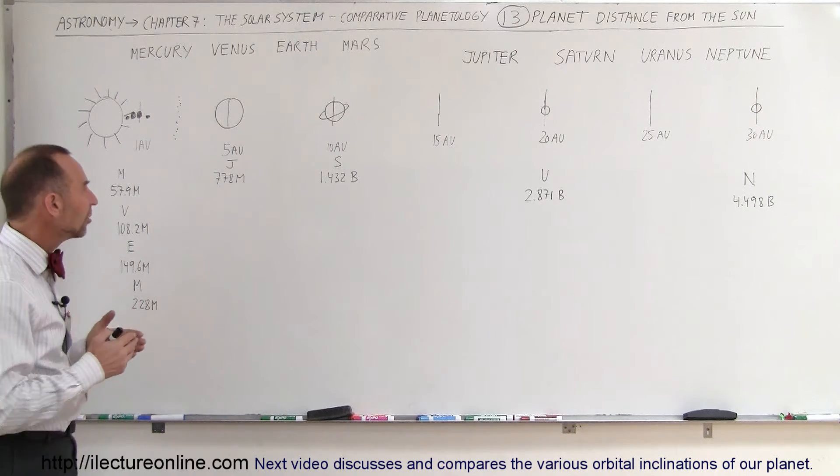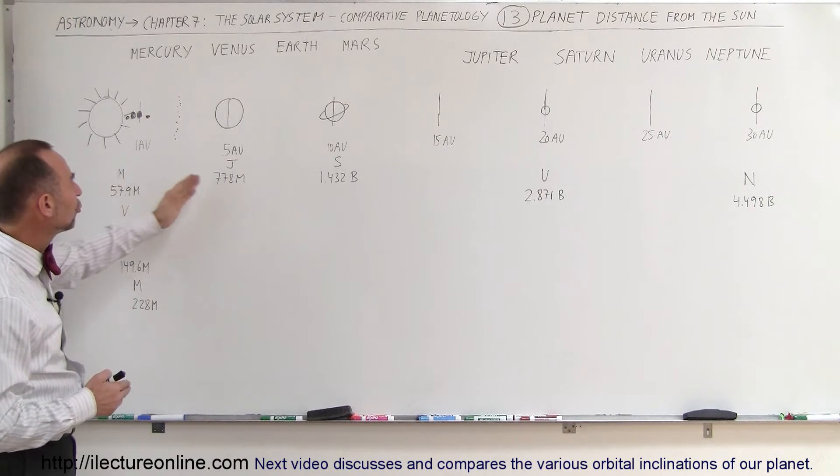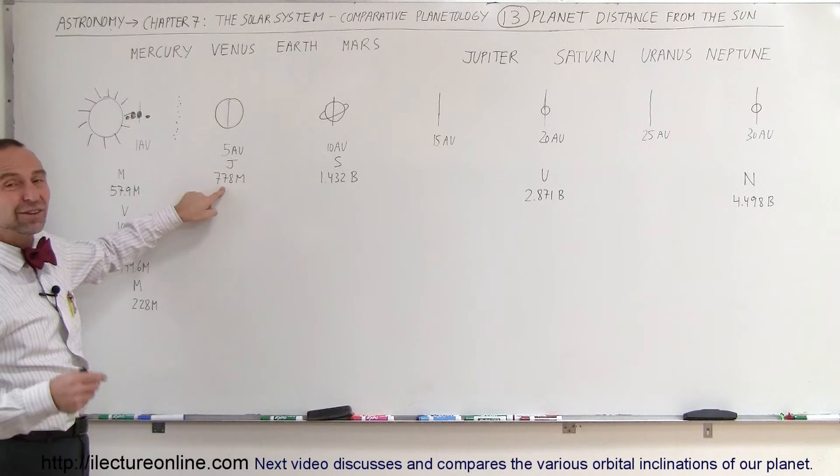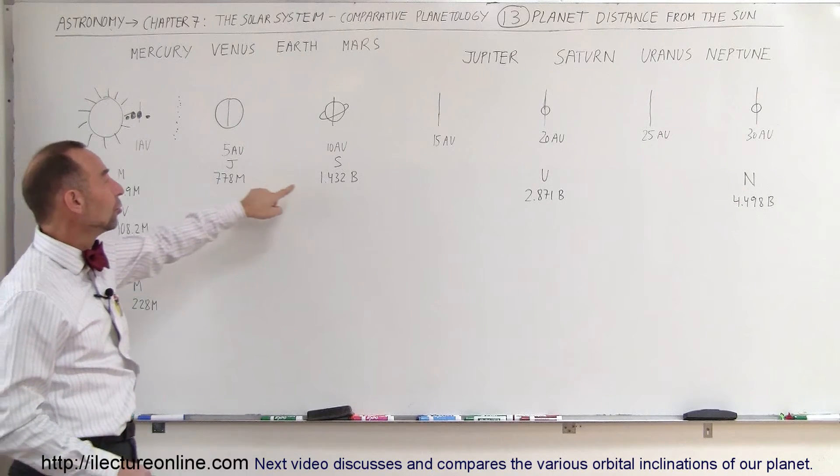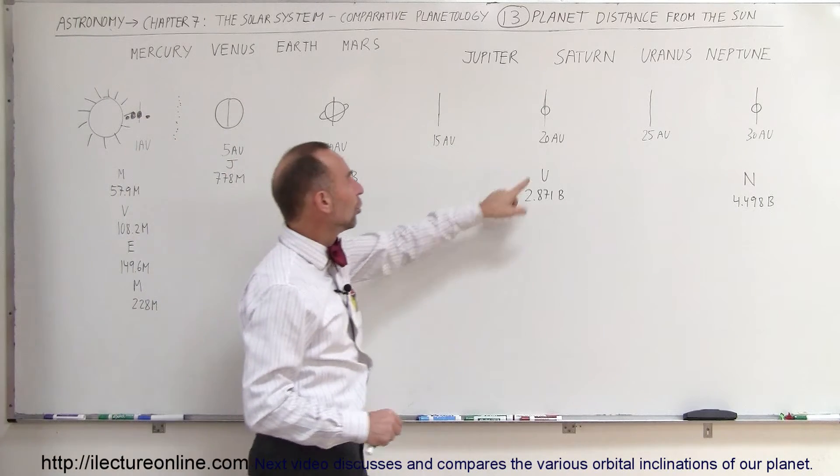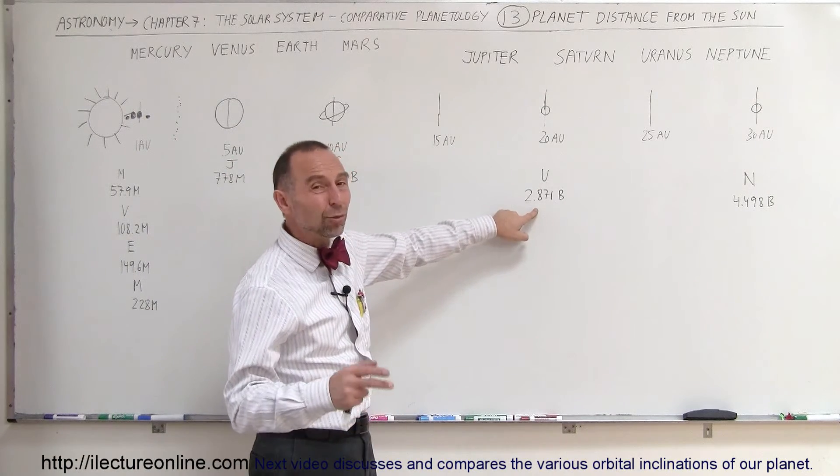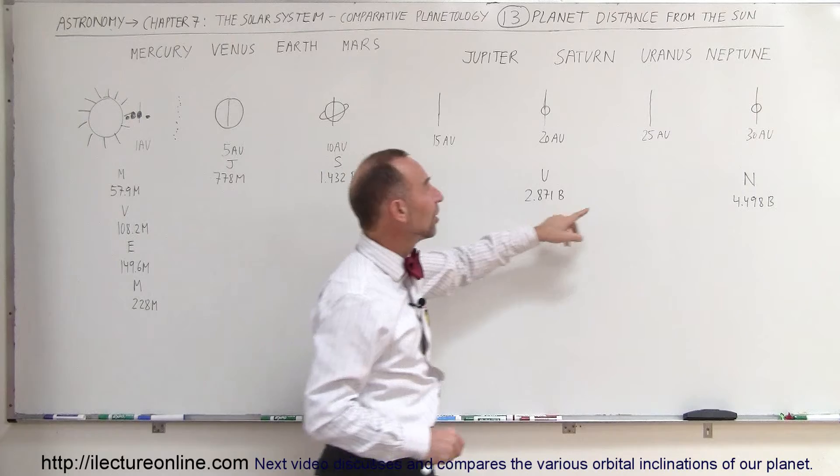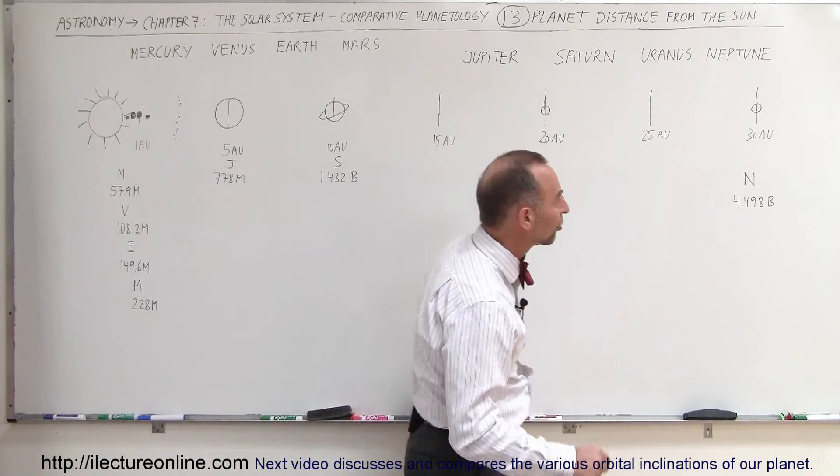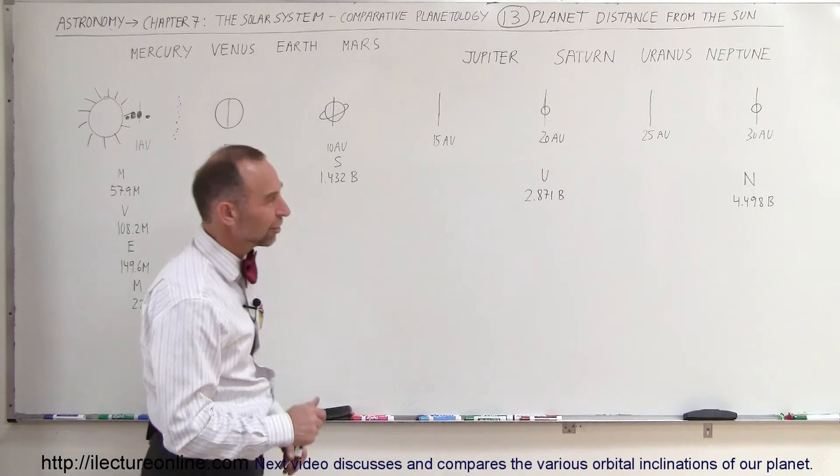Now notice how the distances begin to increase as we go further out. To Jupiter, it's three-quarters of a billion kilometers, 778 million kilometers. To Saturn, it's 1.4 billion kilometers. To Uranus, it's 2.8, almost 2.9 billion kilometers. And to Neptune, it's 4.5 billion kilometers, 30 times the distance between the Earth and the Sun.